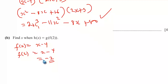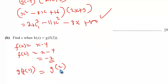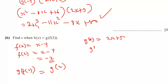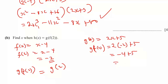Now find gf(2), which means g of f(2), i.e., g(negative 2). Since g(x) equals 2x plus 5, g(negative 2) equals 2 times negative 2 plus 5, giving negative 4 plus 5, which equals 1.